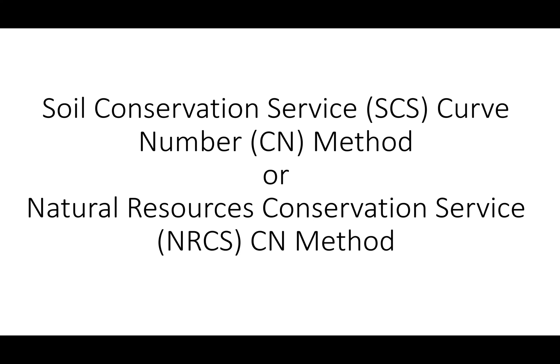In this unit we are going to learn about the Soil Conservation Service Curve Number Method, commonly called the SCS-CN method. Soil Conservation Service was part of the US Department of Agriculture and is now called the Natural Resources Conservation Service. So the new name for the SCS-CN method is NRCS-CN method. In some literature you may find SCS-CN method or NRCS curve number or CN method — they both mean the same.